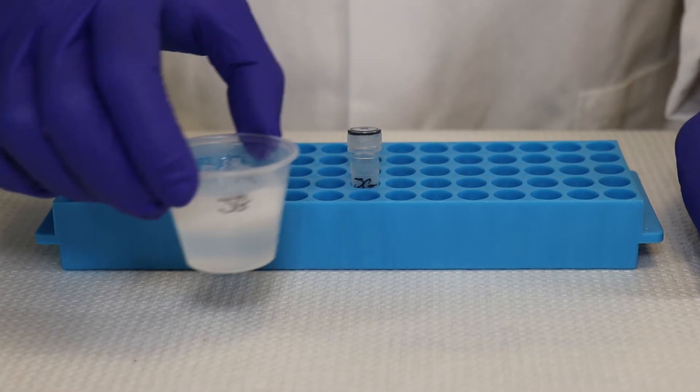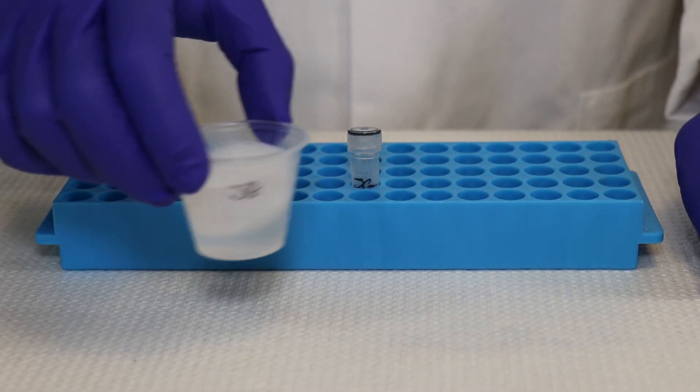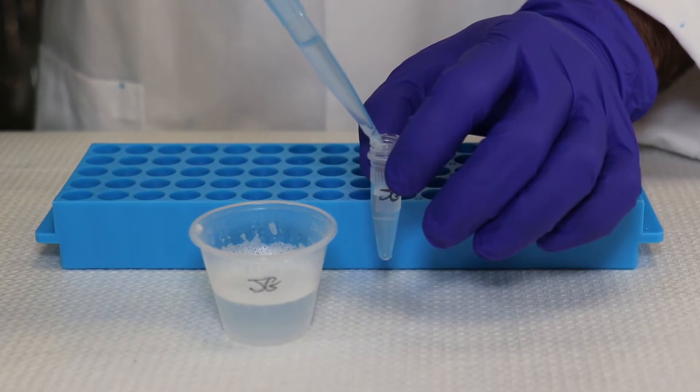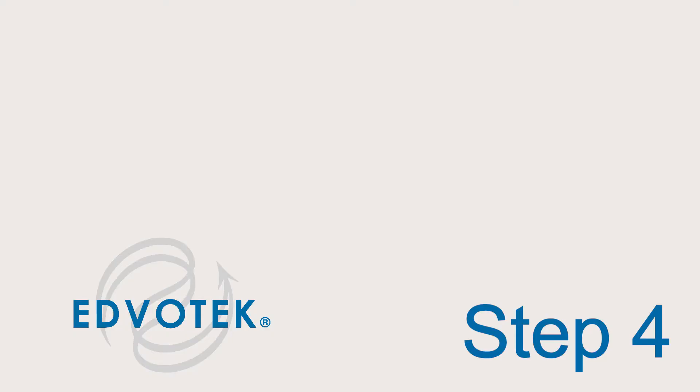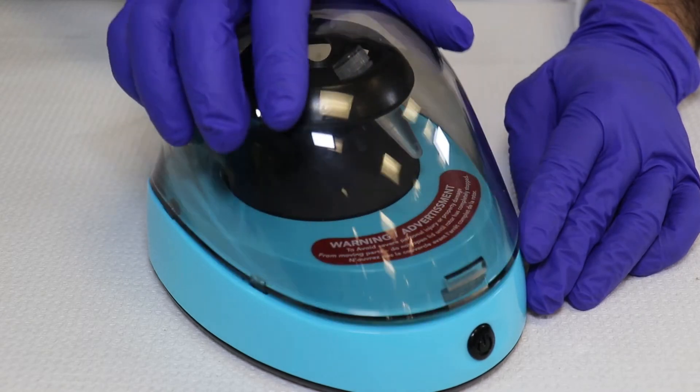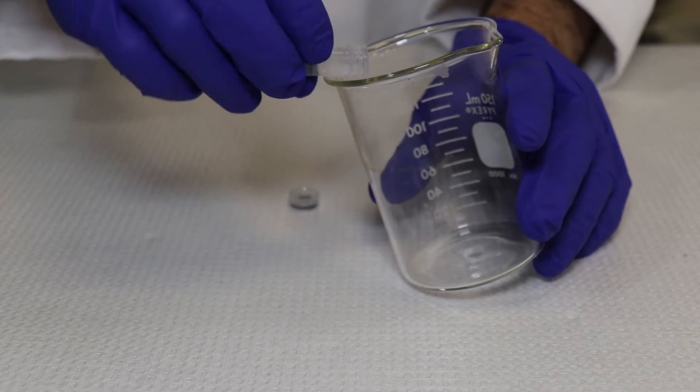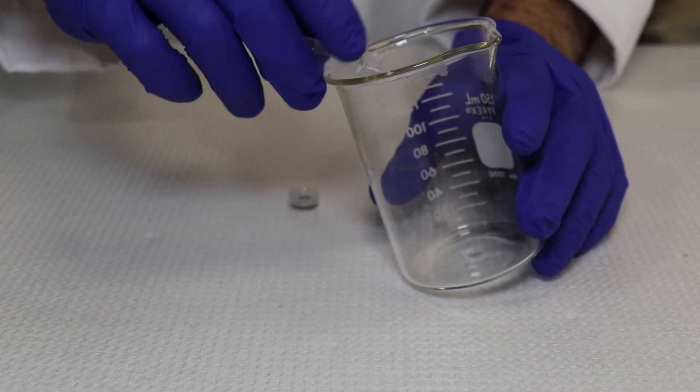Expel this solution back into the same cup. Step 3: Swirl the cup gently to resuspend the cells. Transfer 1.5 milliliters of the cell solution into the screw cap tube with your initials. Step 4: Centrifuge the cell suspension for 2 minutes at full speed to pellet the cells. Pour off the supernatant but be sure not to disturb the pellet.